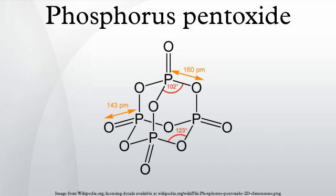Applications. Phosphorus pentoxide is a potent dehydrating agent, as indicated by the exothermic nature of its hydrolysis. However, its utility for drying is limited somewhat by its tendency to form a protective viscous coating that inhibits further dehydration by unspent material. A granular form of P4O10 is used in desiccators. Consistent with its strong desiccating power, P4O10 is used in organic synthesis for dehydration.